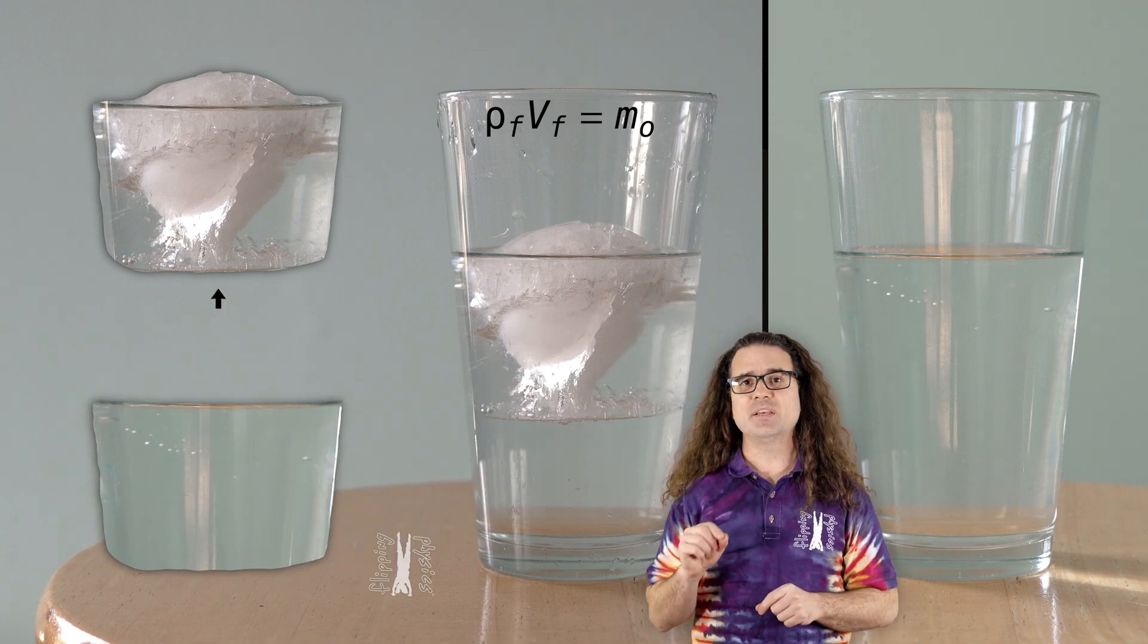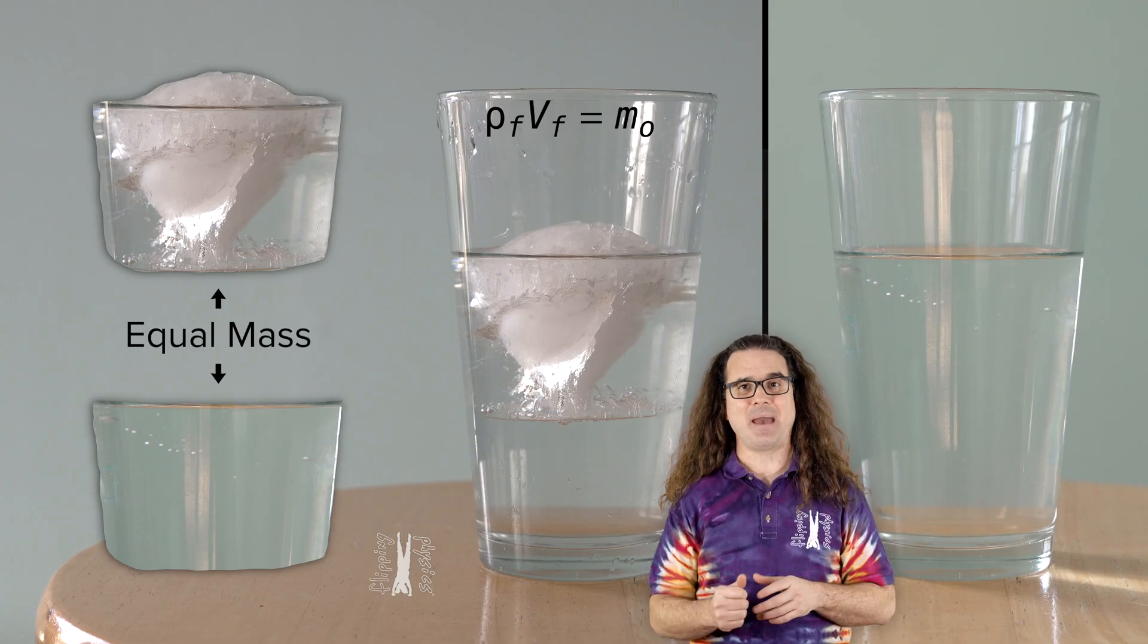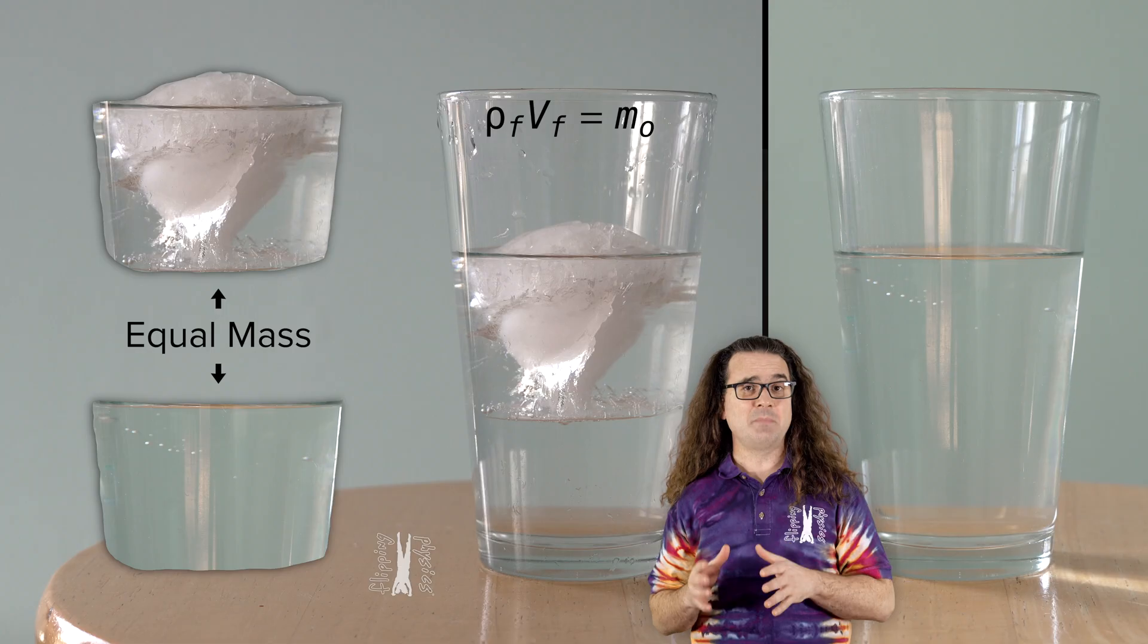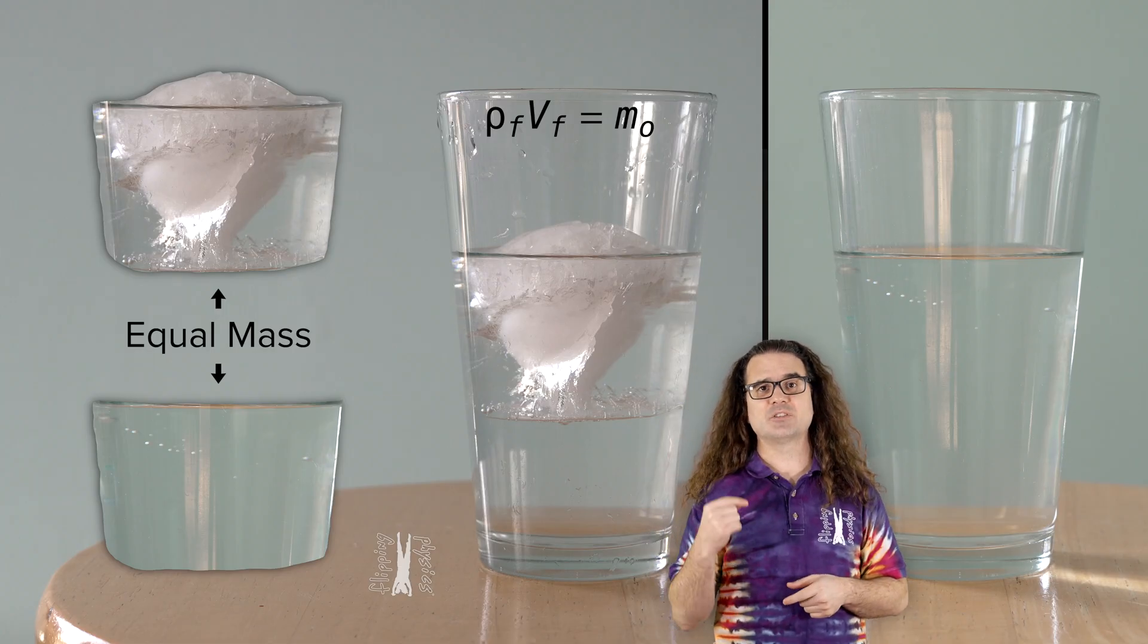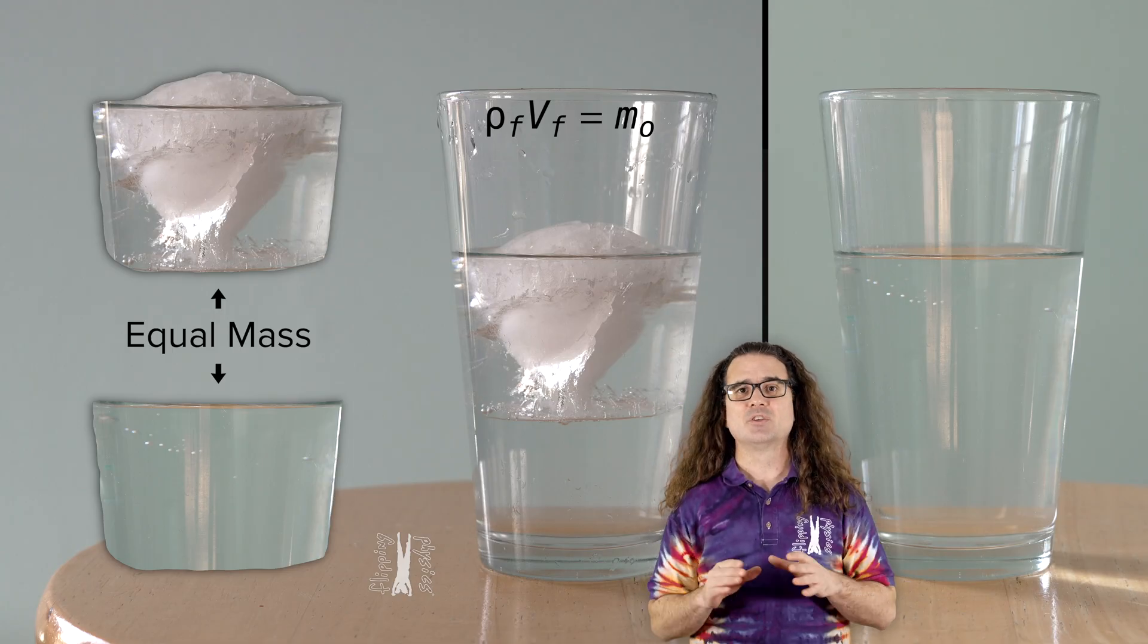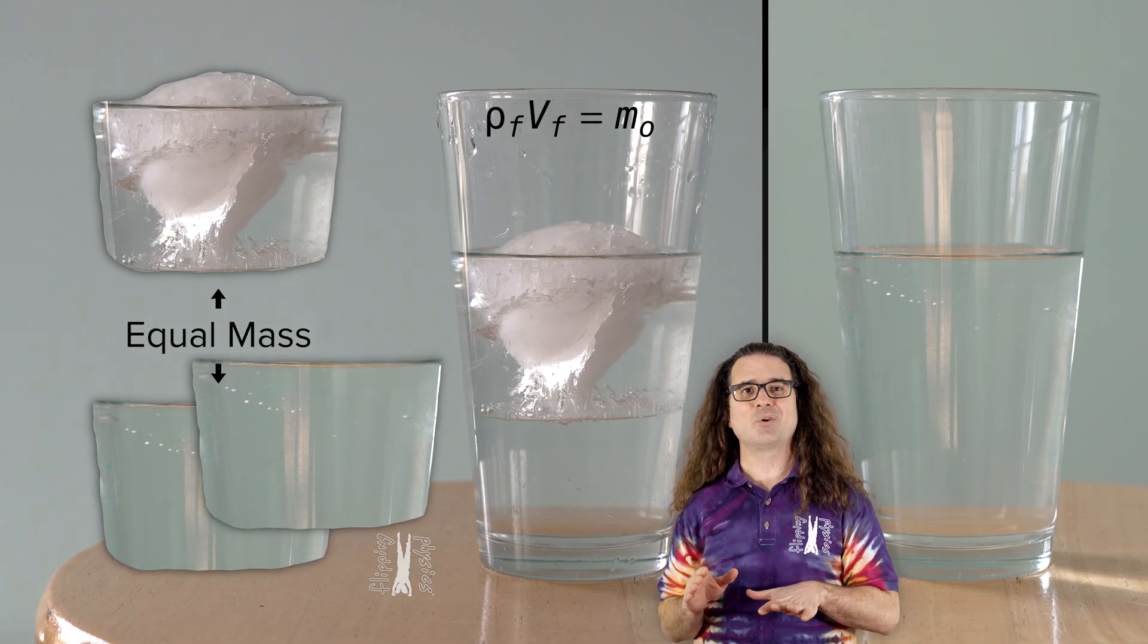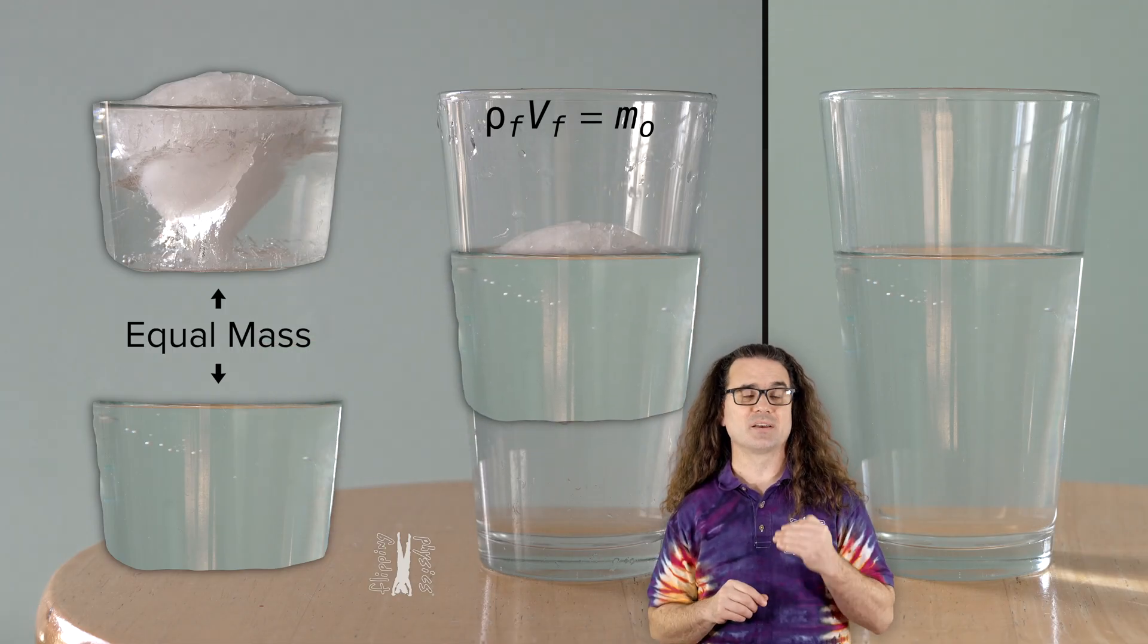To reiterate, this chunk of ice and this volume of water have the same mass. As the ice melts, it becomes water. And the volume of the water fills the space below the water line where the chunk of ice used to be. So, replacing the chunk of ice with an equal mass of water means the water level will stay the same.